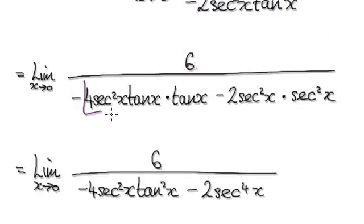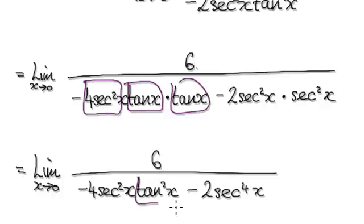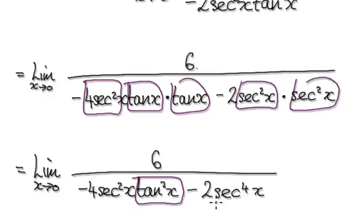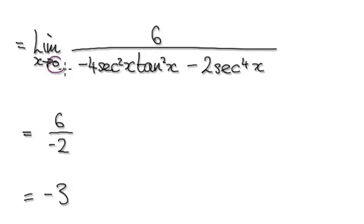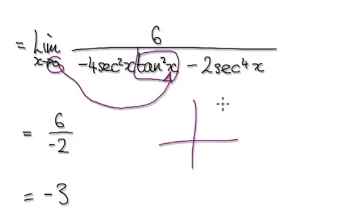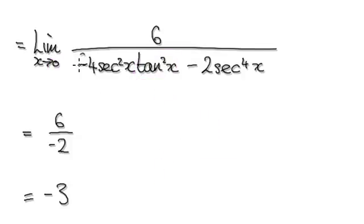Now tidy this up. Here you've got tan times tan — that takes you to tan squared. Then secant squared times secant squared gives secant to the power of 4. Now test it — so if we put 0 into here, because tan looks like this, tan of 0 is 0, making this whole term here 0, so we can forget about it.